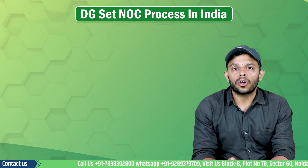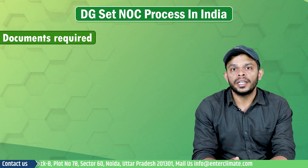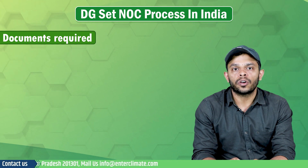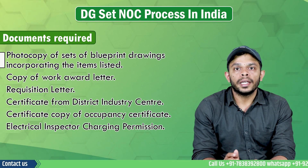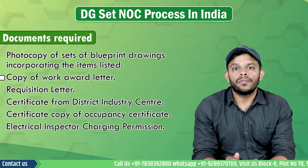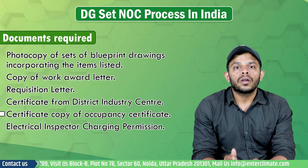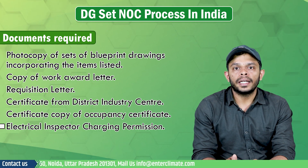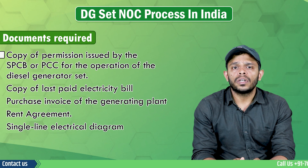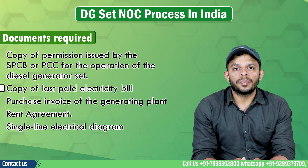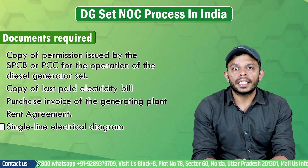Let's now see what documents are required for this NOC. The application for DG set installation must be submitted to the electrical inspectorate with relevant documents and drawings, including: photocopy sets of blueprint drawings, copy of work award letter, requisition letter, certificate from district industry centre, certificate copy of occupancy certificate, electrical inspector charging permission, copy of permission issued by the SPCB or PCC for the operation of the DG set, copy of last paid electricity bill, purchase invoice of the generating plant, rent agreement, and a single line electrical diagram.